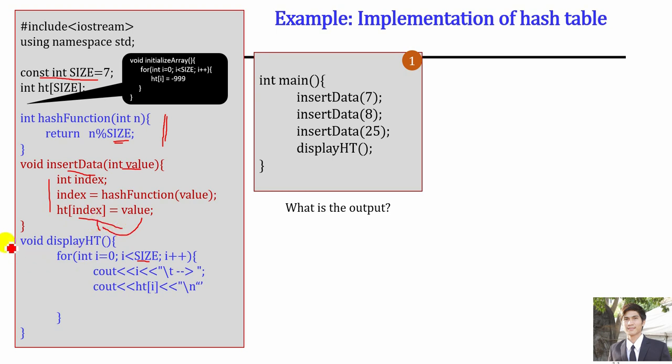Last but not least, we can display our hash table using a display function. Since the hash table is a kind of array, we access each element inside using a for loop in the normal way we access arrays. This is the very basic part of the hash table.